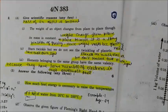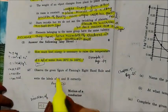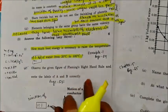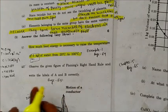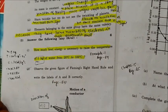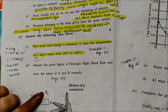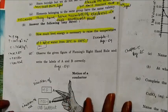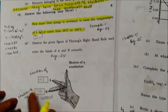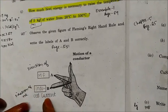Observe the figure of Fleming's right-hand rule and write the labels for A and B. Here you have to write MF — the direction of the magnetic field — and here you have to write the direction of the induced current.